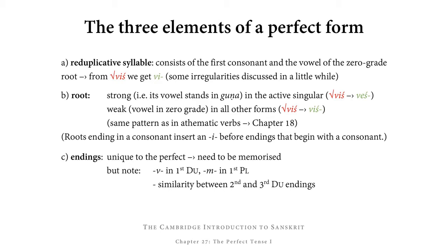Secondly, there is the verbal root, which is strong — i.e. with its vowel standing in guna — in the active singular. So from viś we would get veś. And which is weak — i.e. with its vowel in zero grade — in all other forms, so viś simply remains as viś. Note that this is the same pattern found in athematic verbs introduced in chapter 18, where we had a strong stem in the active singular and a weak stem everywhere else.